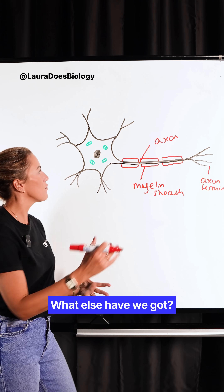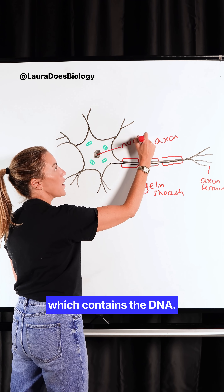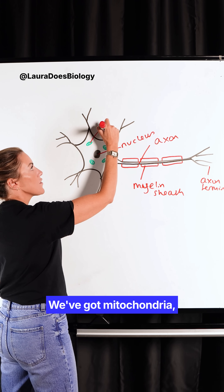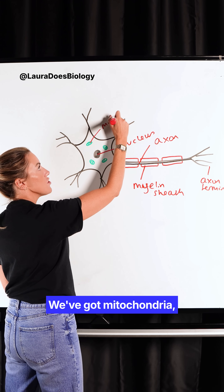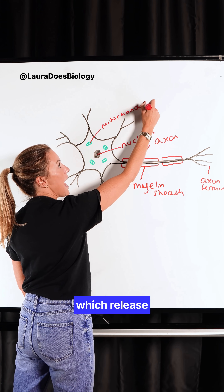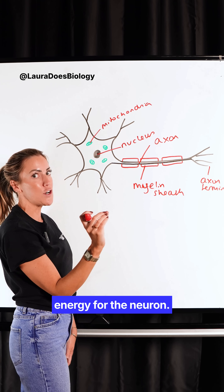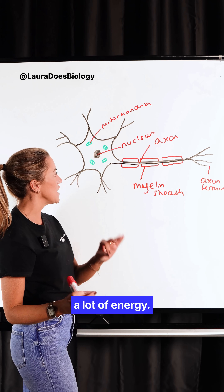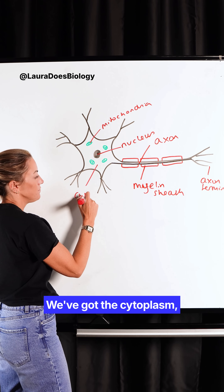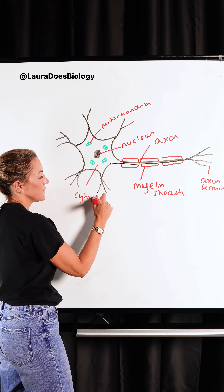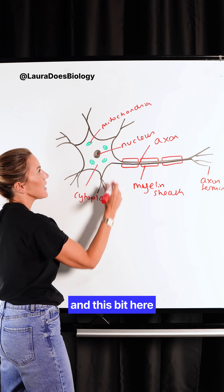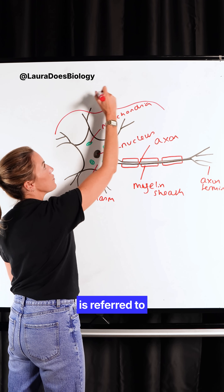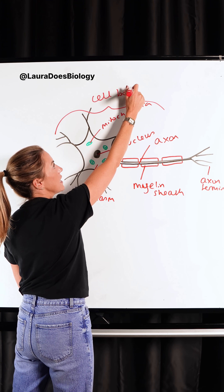What else have we got? We've got the nucleus, which contains the DNA. We've got mitochondria, which release energy for the neuron — and neurons need a lot of energy. We've got the cytoplasm. And this bit here is referred to as the cell body.